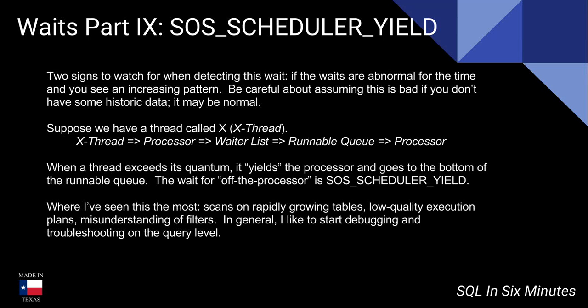The disclaimer here is that you want to be careful that this is actually a problem before you start troubleshooting it. Two signs to watch for are if the waits are abnormal for the time and you see an increasing pattern. If you don't have a baseline, you might be trying to solve a problem that doesn't exist.